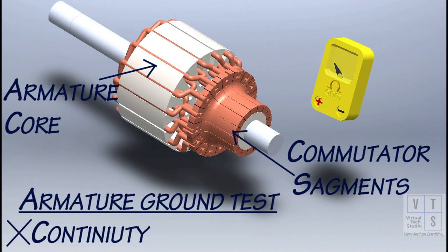Next we will perform armature ground test. Between commutator segments and armature core should be insulated and no continuity should exist.